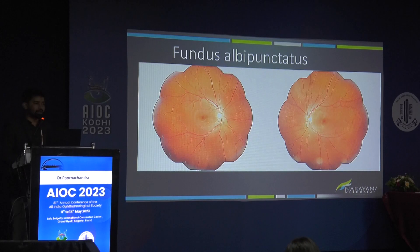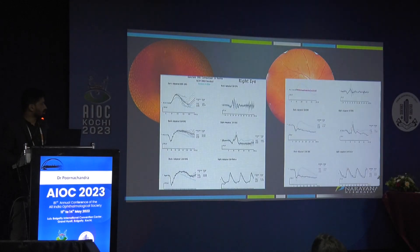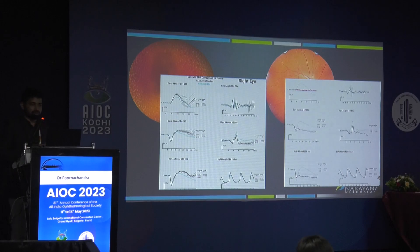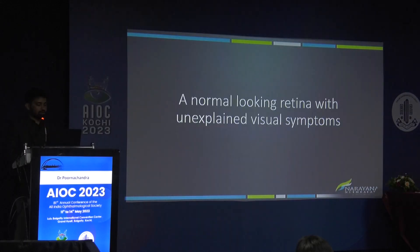This patient had fundus albipunctatus, a form of congenital stationary night blindness. Comparing the two cases: the first had extensive flecks, the second had minimal fleck-like deposits — yet the ERGs told completely different stories. This illustrates a key principle: structural appearance does not always reflect functional integrity. If you want to understand functional integrity, electrophysiological testing is essential.